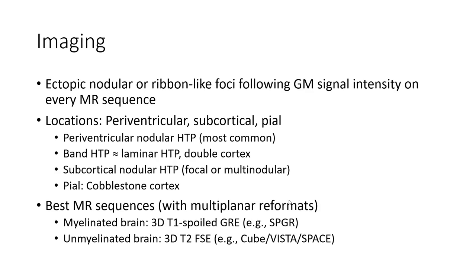On imaging, ectopic nodules follow the same signal intensity as gray matter on all sequences. Location may be periventricular or subcortical, with subtypes including periventricular nodular heterotopia or double cortex, and subcortical nodular band.